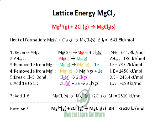This value may not be exactly the same as the literature value, but it will be very close. As long as your steps are correct, that's what matters. In an exam, all the values will be given to you — your aim is to write the correct equations. You need the heat of formation, the heat required to convert solid magnesium to gas, the ionization energies of magnesium, the bond energy of chlorine, and the electron affinity. Putting them together and multiplying equations so that unwanted terms cancel gives you the correct lattice energy.